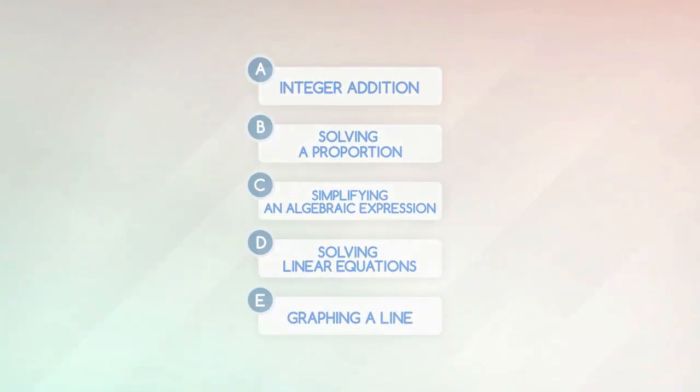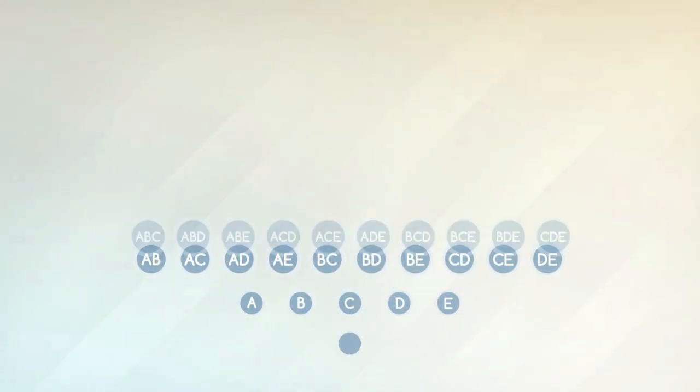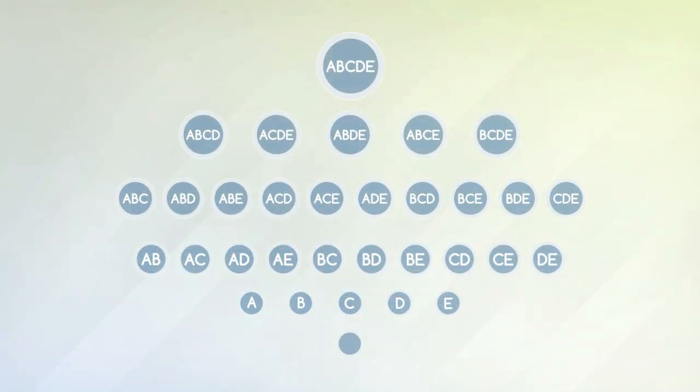But even with only 5 topics, there are 32 possible knowledge states, or combinations of these topics.